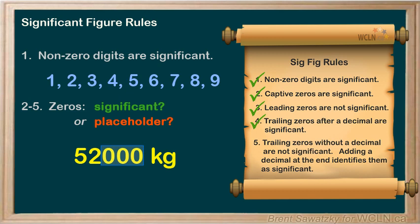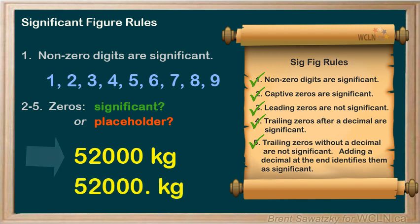The problem is: what if the person making the measurement truly wanted these zeros to be significant? Maybe they measured the 52,000 kilograms to within a kilogram. How do we indicate that zeros are placeholders showing size, and also significant indicating precision? The trick is to not include a decimal if these zeros are placeholders. But if all these zeros are significant, we would just put a decimal at the end. So without a decimal, this number has two sig figs. But with a decimal at the end, that indicates that these are all significant figures, and therefore it would have five sig figs.